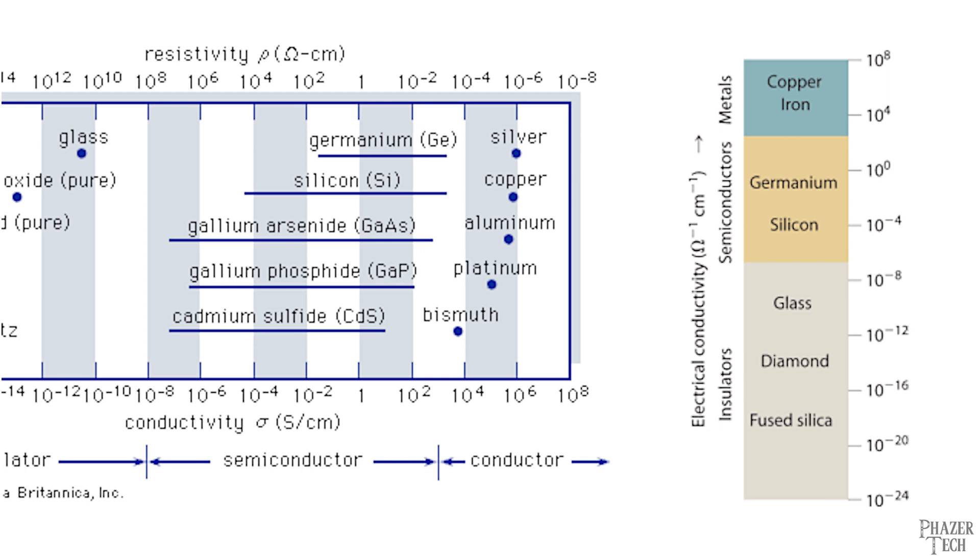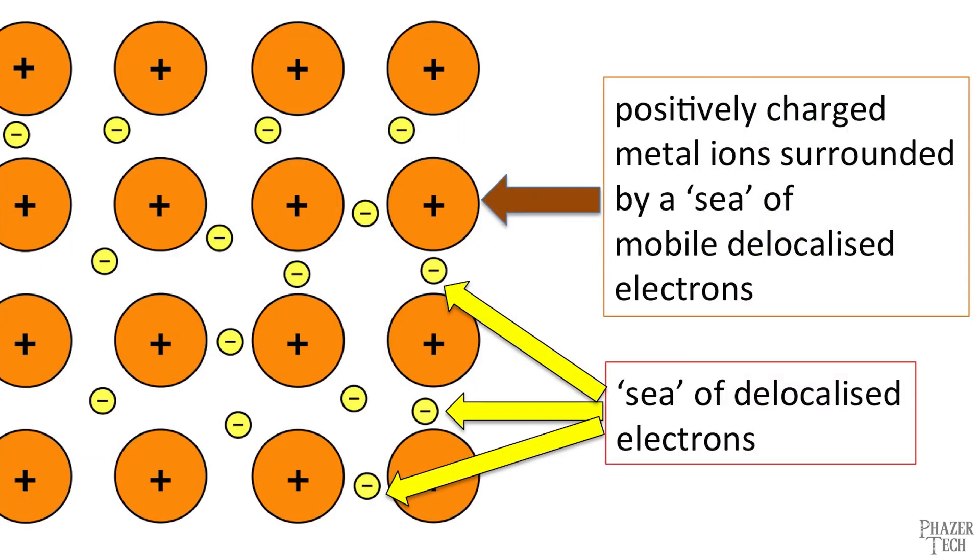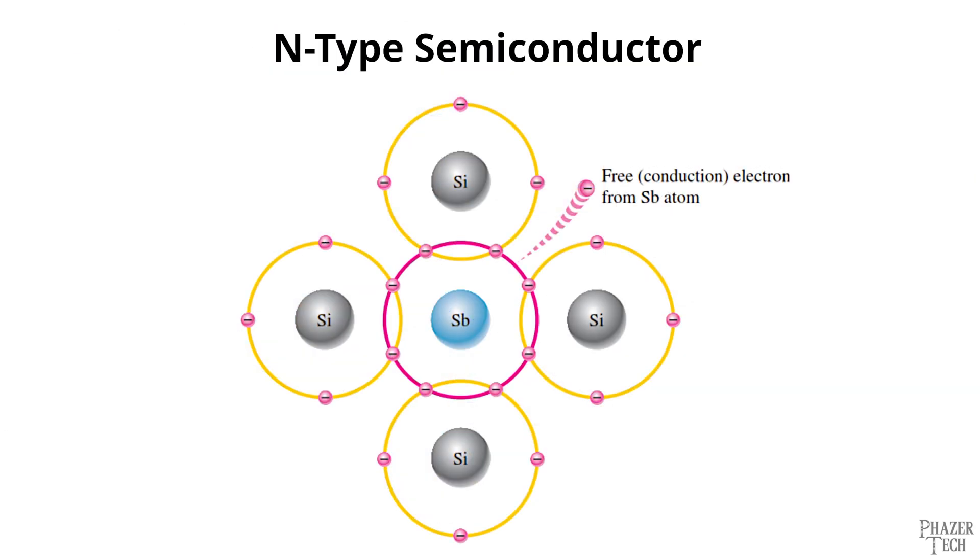This means their conductive properties can be altered in a useful way by applying impurities, or other elements, in a process called doping. The reason why some elements are conductive is because they contain free electrons and contain an overall negative charge, while non-conductive elements are lacking free electrons. So if a semiconductor such as silicon is doped with elements containing free electrons, then the properties of the silicon will be altered to become a conductor.